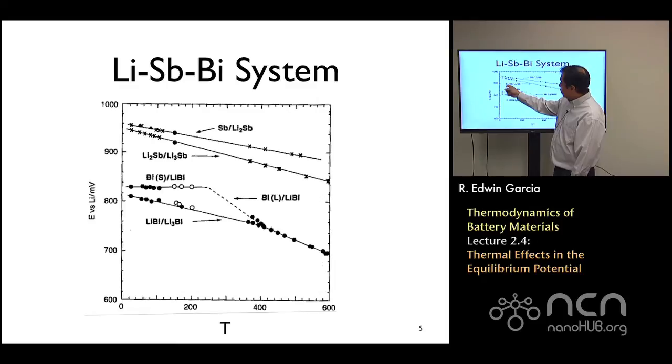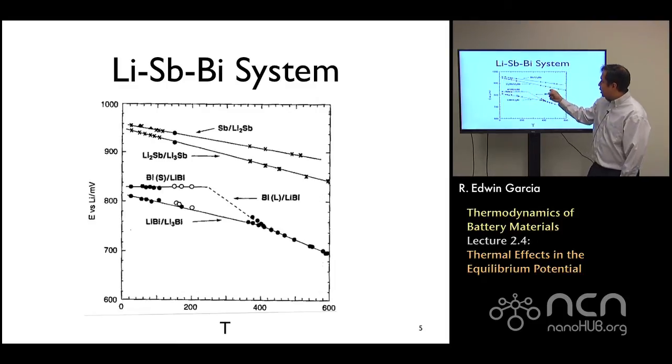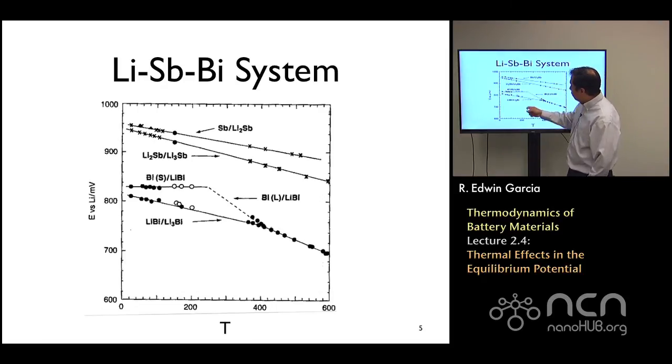This suggests very clearly how the entropic contribution is dominating the system. For the Li₂Sb system, you can see the same type of response, except that now you have a larger, much more negative slope, suggesting that the entropic contribution is greater. And what I find here very interesting is the bismuth—you can see the Li-Bi system—and how it undergoes this discontinuity in the slope.